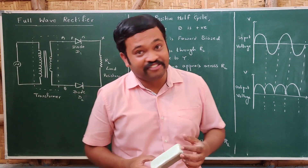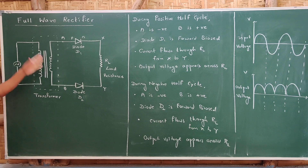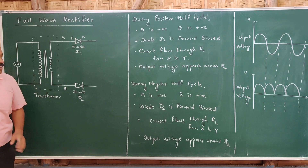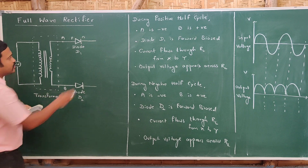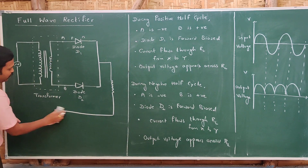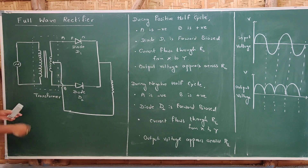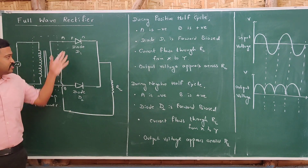After completing the half wave rectifier, let us move on to the second type, called the full wave rectifier. Here there is again an AC input and a transformer. The main difference between the half wave rectifier and the full wave rectifier is that here we are using two diodes. The transformer used here is called a center tap transformer, and the two diodes are connected to a load resistance.